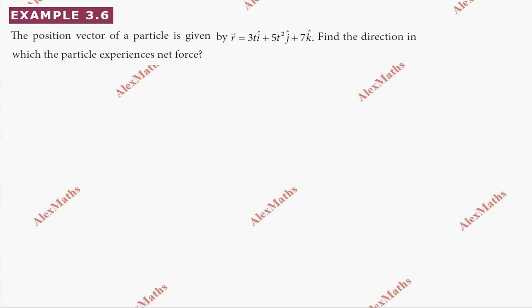Hi students, this is Alex. Here, Example 3.6: The position vector of a particle is given by r vector = 3t i cap + 5t² j cap + 7k cap. Find the direction in which the particle experiences net force.